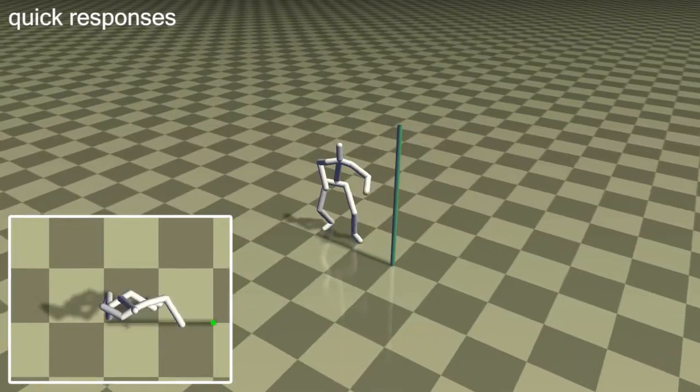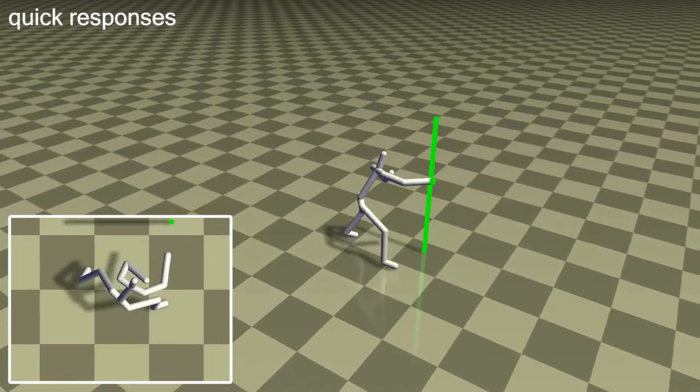Similarly, the punching character can adjust the arm mid-punch. Note how the hand follows the target as it is moved out of the way.